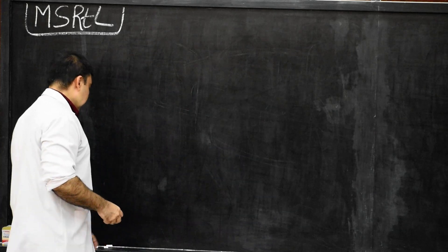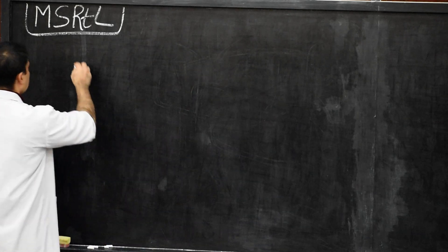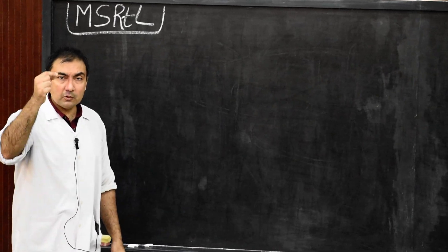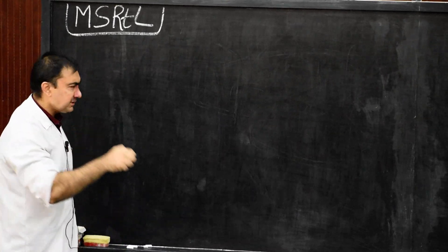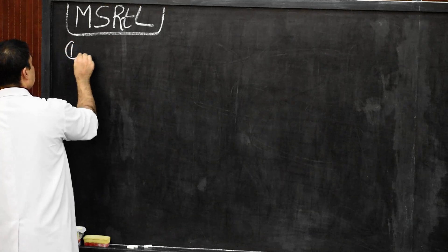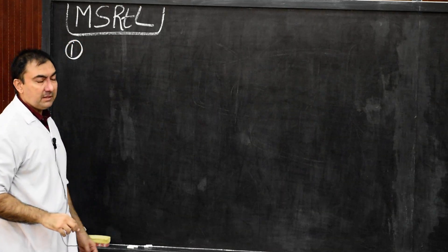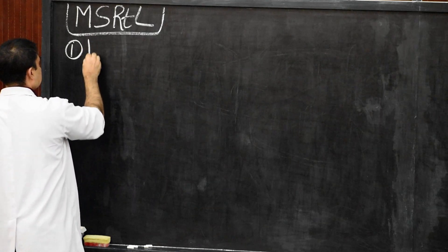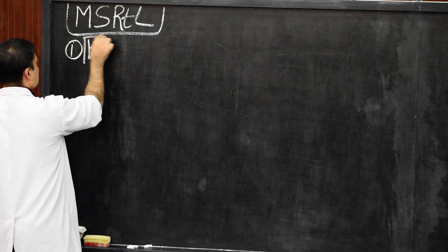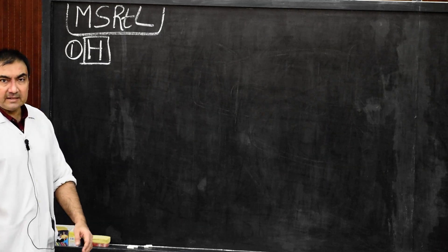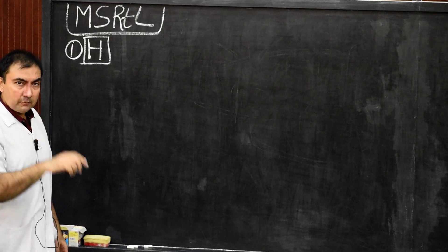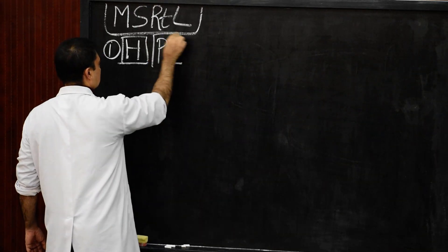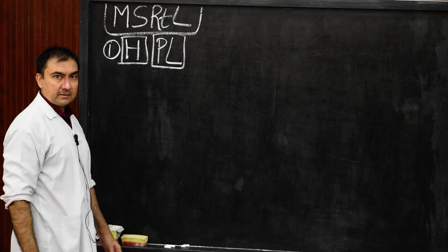Here we go with the mediastinal surface. The relations of mediastinal surface of the right lung are organized according to two main points. The first point is the hilum of the lung, along with the pulmonary ligament.